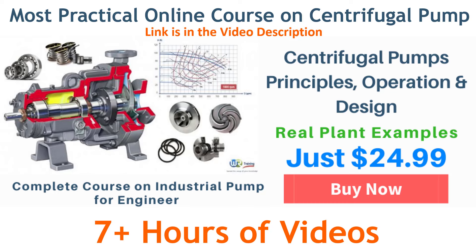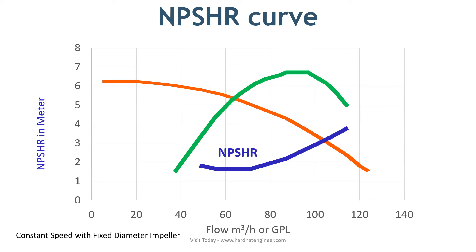The next curve is the NPSH required curve. Net positive suction head at the pump suction is necessary to prevent cavitation in the pump. From the curve, you can see that the NPSH requirement increases with higher flow rate — more liquid with higher head has to enter the pump when you push more liquid out.